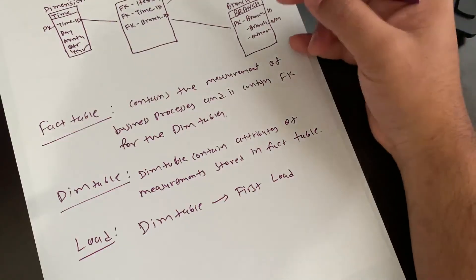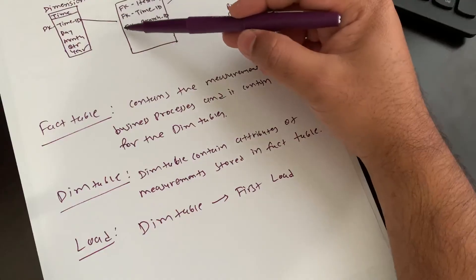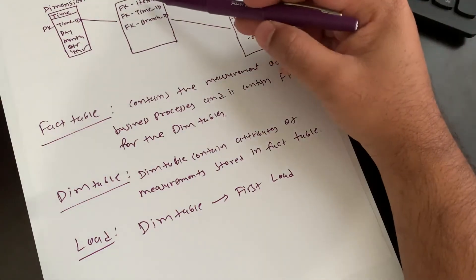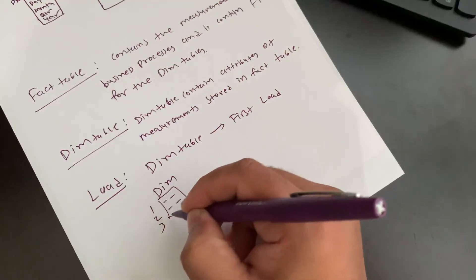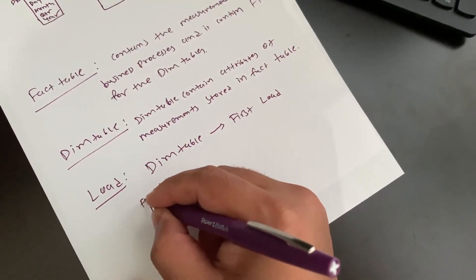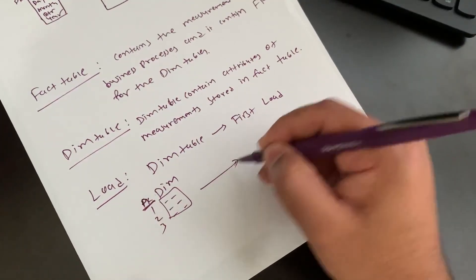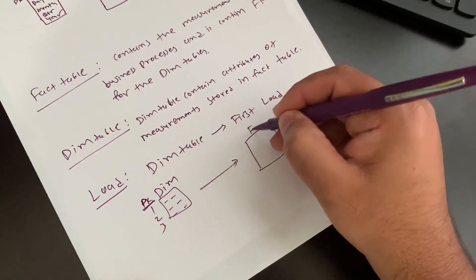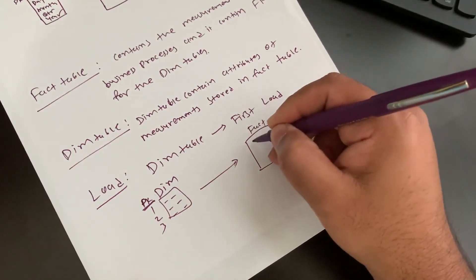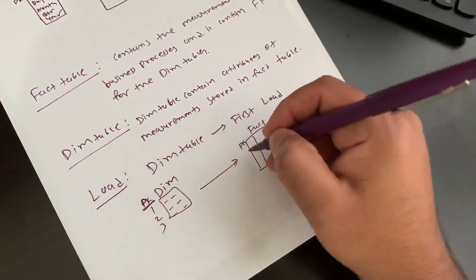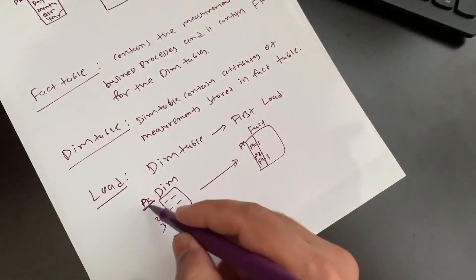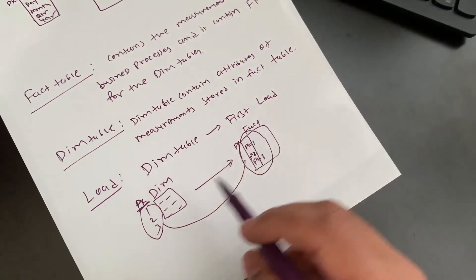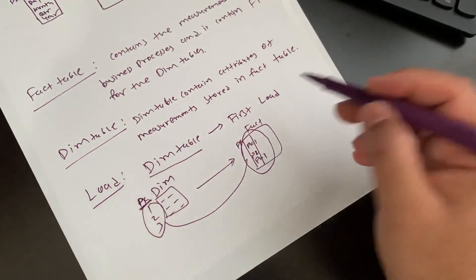This is because of referential integrity — just like a parent must exist before a child, without data in the dimension table we cannot generate foreign keys for the fact table. So the dimension table loads first, and then the fact table. Always dimension table loads first, then fact table.